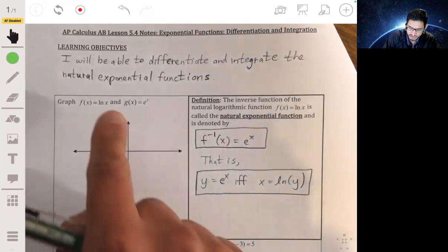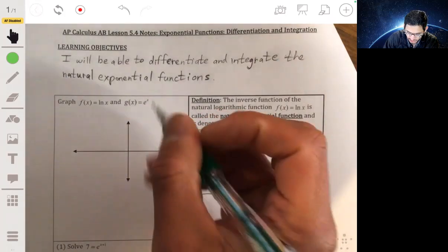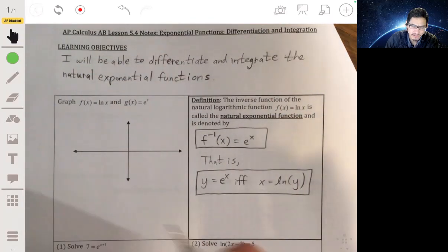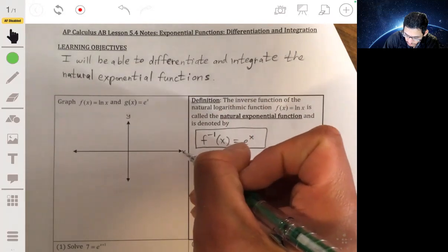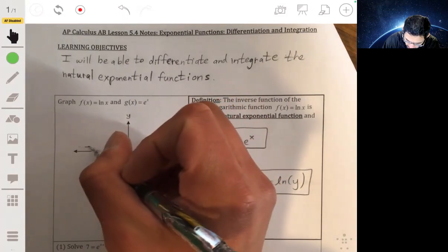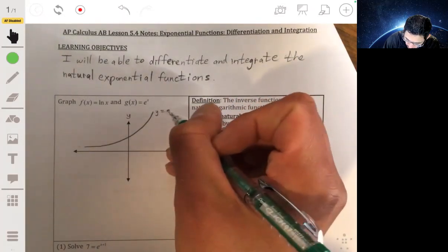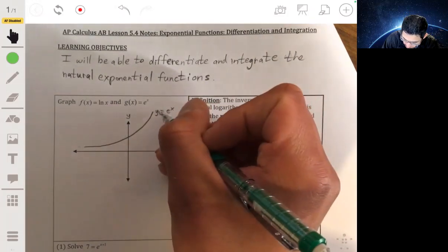So let's go ahead and just draw a sketch of what these would look like. So remember e to the x is just an exponential function with a base of e, where e is about 2.7-ish. So if it's exponential and e is positive, greater than one, then it's going to be doing something like this. This will be your function y equals e to the x. Or I guess we name it g.